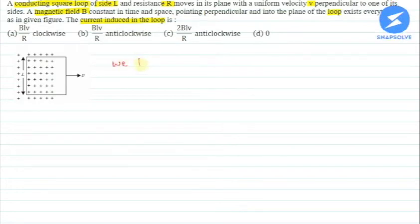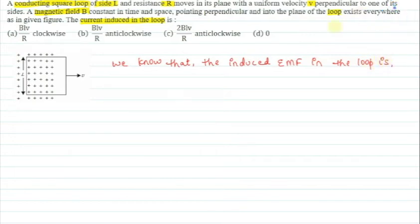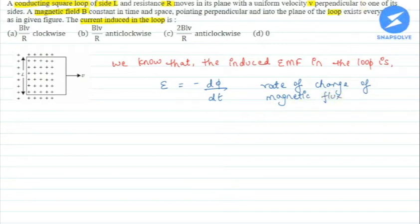We know that the induced EMF in the loop is: EMF is equal to minus dφ by dt, meaning rate of change of magnetic flux.